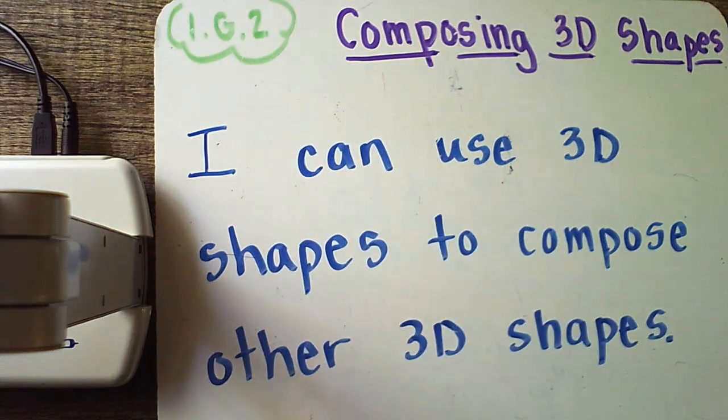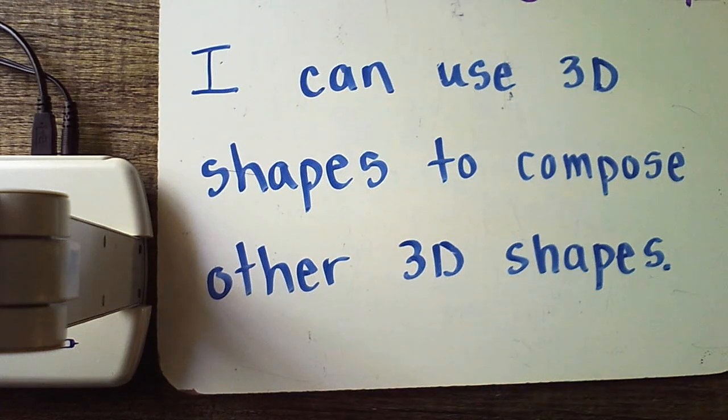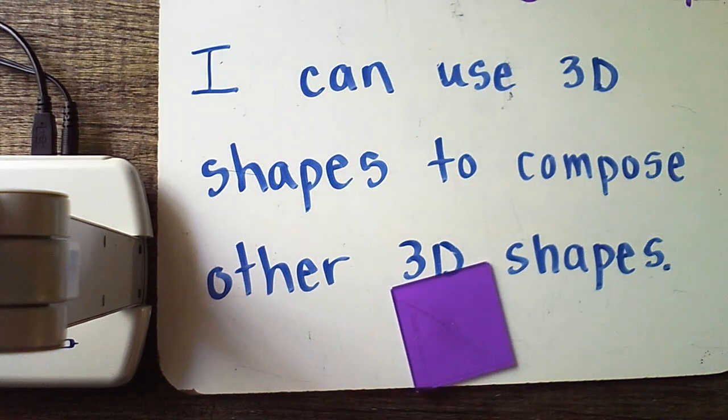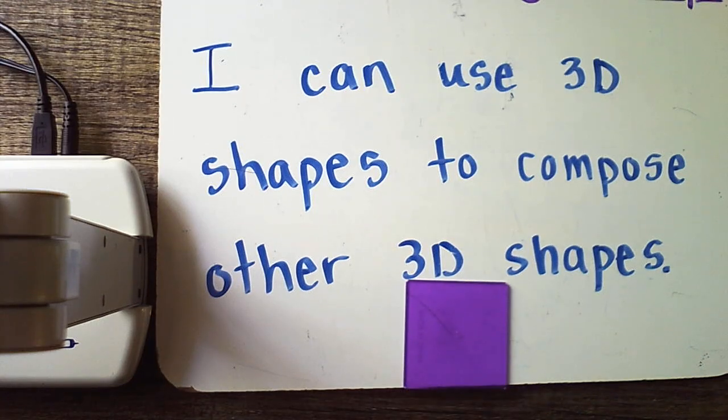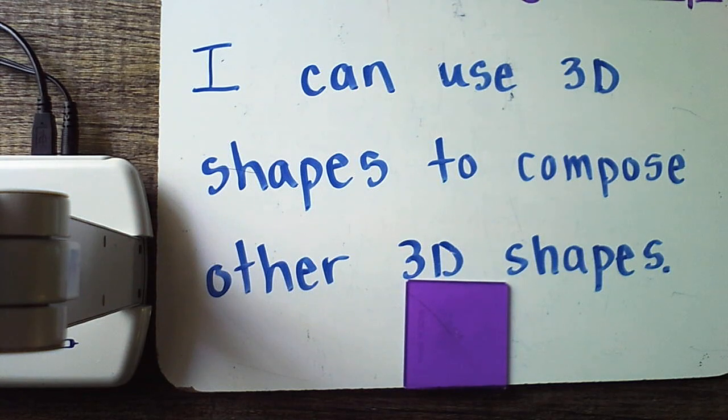We touched the standard 1.G.2 on Wednesday when we were composing 2D shapes. So let me show you what we did there. If you watched my video where I showed you that awesome online tool, we said that when we compose something, compose is just a fancy word for put together. For example, I have this 2D shape here. Remember 2D shapes are what? Flat like a pancake. Thank you very much.